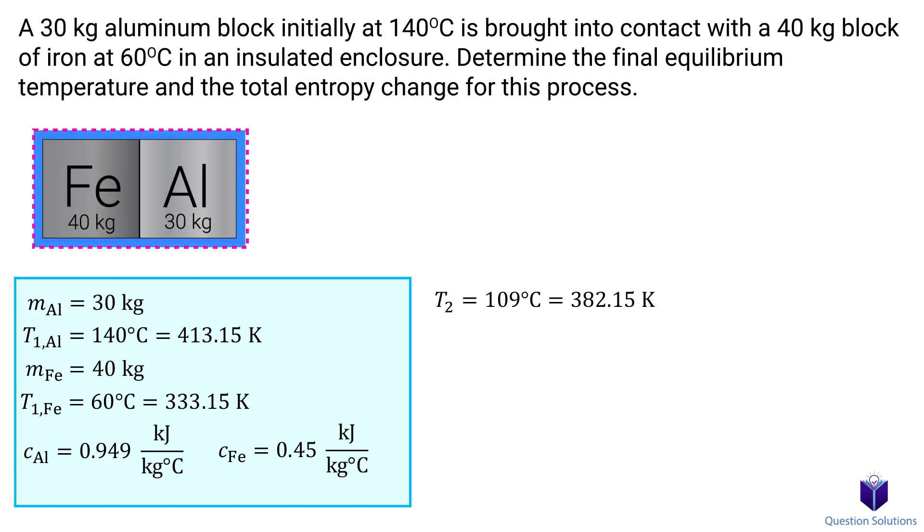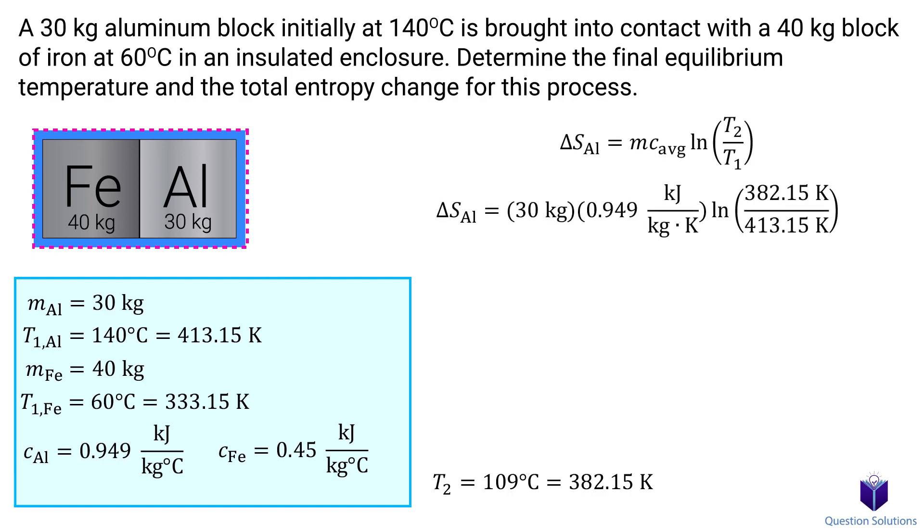Now that we have the equilibrium temperature, we can figure out the entropy change. Let's start with the aluminum block. Plugging in our values and solving gives us the entropy change of the aluminum block.